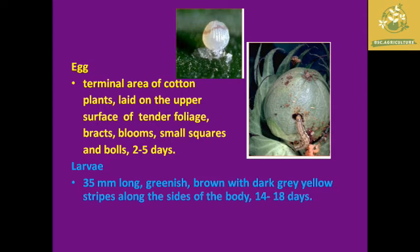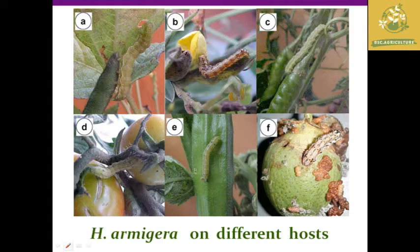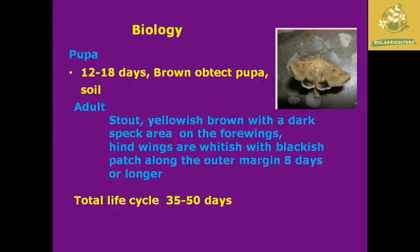The larvae are greenish-brown with dark grey-yellow stripes on the body, particularly yellow stripes on the sides. They can grow around 14 to 80 times based on the climatic period. The pupa is a brown upturned pupa, and the adult is a stout yellowish-brown moth with a dark spot area on the forewings and hindwings, with a whitish-black patch on the outer margin.